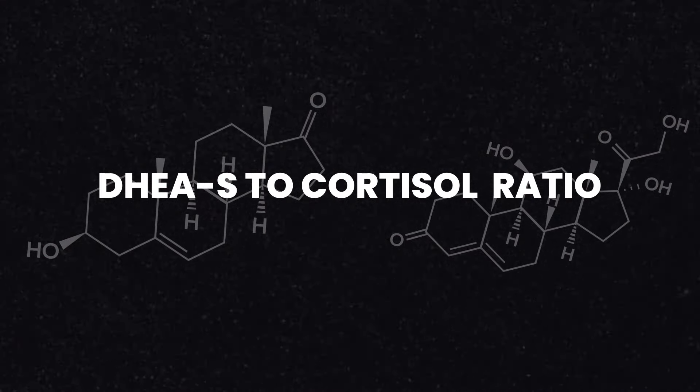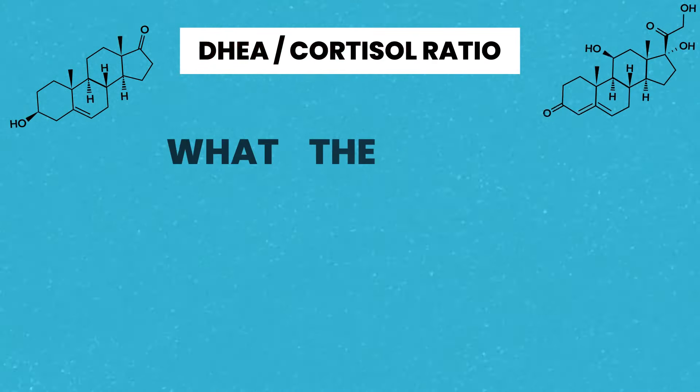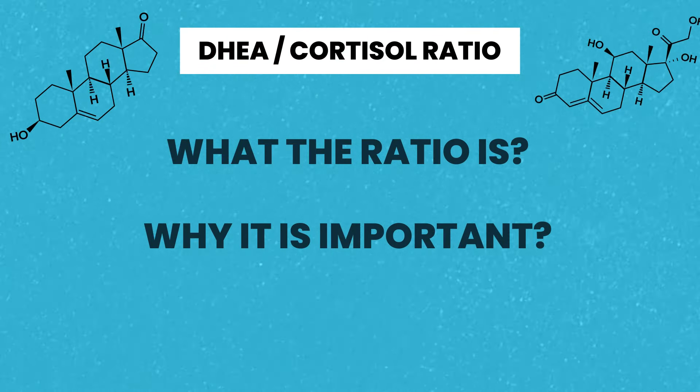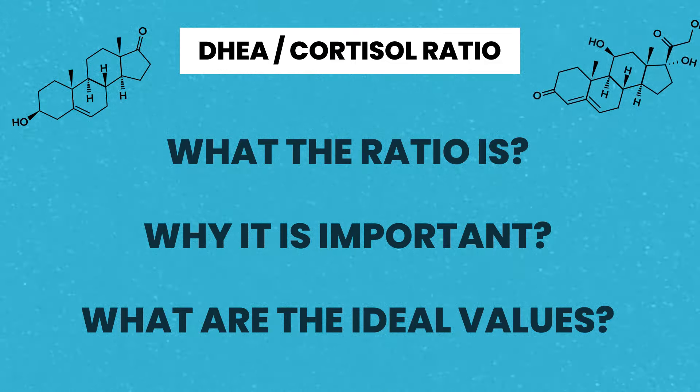Recently, both Dr. Paul Saldino and Thomas DeLauer have been talking about a key metric that has been discussed inside the bioenergetic sphere for years at this point. This metric is the DHEAS to cortisol ratio, and it's extremely important in understanding what your general level of stress is. In this video, I'm going to explain what this ratio actually shows us and why it's so important, what the ideal ratio is that you should shoot for, and also what are four steps that you can do to recover your DHEAS to cortisol ratio if that ratio is indeed low.